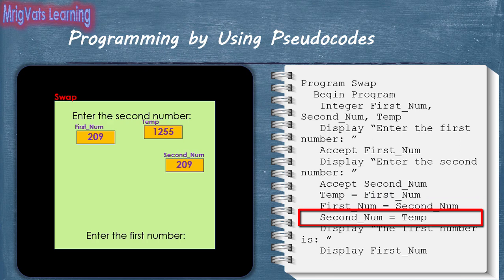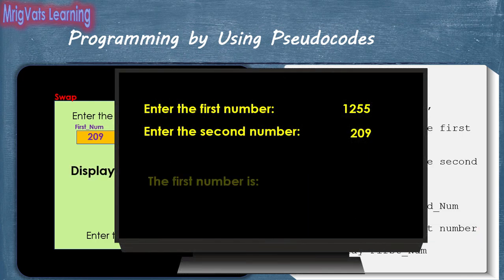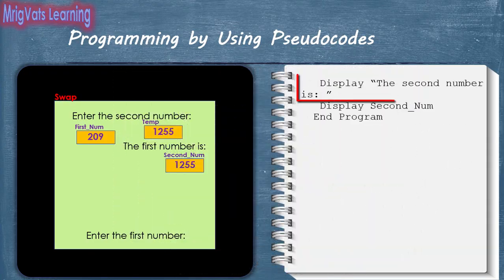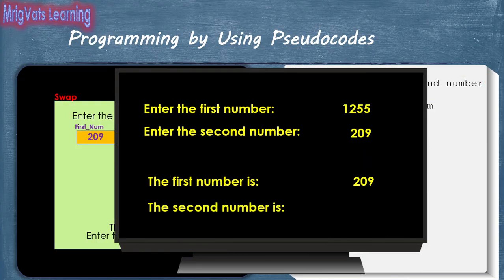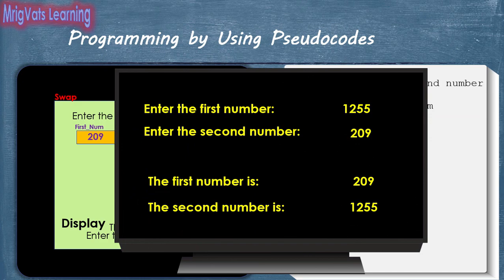When the next statement is run, the program assigns the value of temp to secondnum. This completes the process of swapping the values of firstnum and secondnum. When the display statement is run, the program writes 'The first number is' text in memory and displays it on the virtual display board. The next display statement takes firstnum as input and displays it. Similarly, 'The second number is' is displayed, followed by the value of secondnum on the virtual display board.